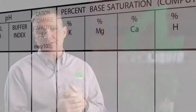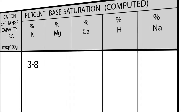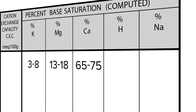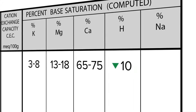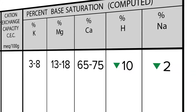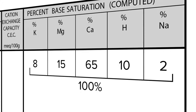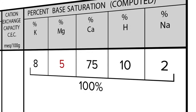Base saturation is about the ability of the soil to stay in balance. We'd like the ratio of potassium to be between 3 and 8 percent, magnesium between 13 and 18 percent, calcium between 65 and 75 percent, hydrogen below 10 percent, and sodium below 2 percent. All of those cations should add up to 100 percent — therefore if one nutrient is out of balance or too high, it's going to take something away from one of the other cations.